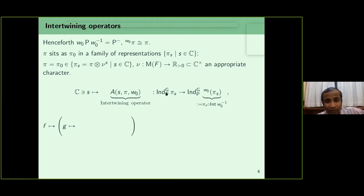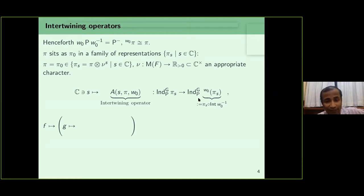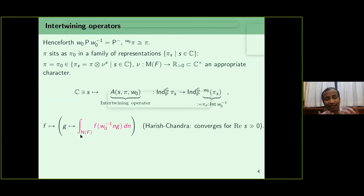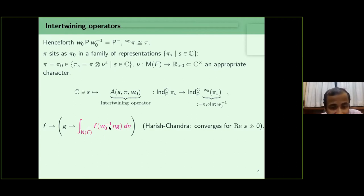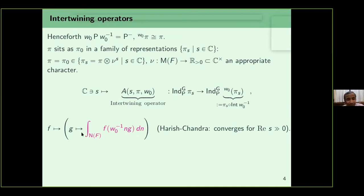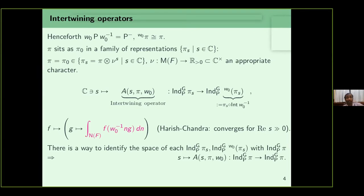Any element of the induced representation is a function f from G to the space of π. The intertwining operator is defined by the integral of f evaluated at W_0^{-1} n g, integrated over the unipotent radical N of F. Harish-Chandra proved this integral converges when the real part of s is sufficiently large. Although convergence was only for sufficiently large real part of s, one can meromorphically continue the operator to the entirety of the complex plane.